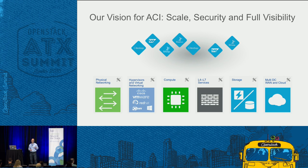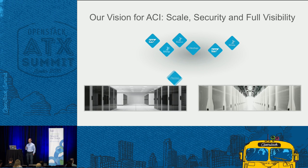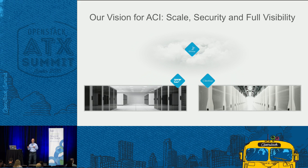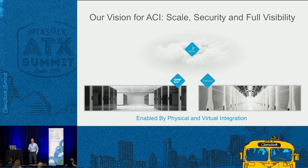The most important part is the application-centric, group-based policy model designed into the heart of the ACI fabric. The goal was to deliver application agility, help deploy applications more quickly, and accelerate the time to move a new application from design all the way to production — without compromising security. The policy scales across physical, hypervisor, compute, Layer 4-7, storage, and multi-data-center environments.